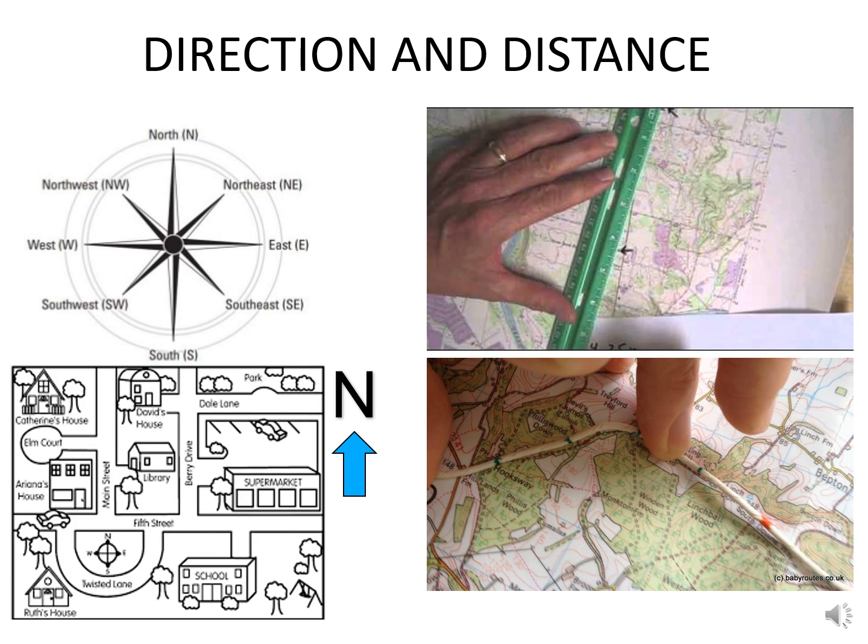Distance is found between two places on a topographical map in two ways. First is direct distance, or distance as the crow flies, which is measured using a ruler. Indirect distance between two places is measured along the map with the help of a string.